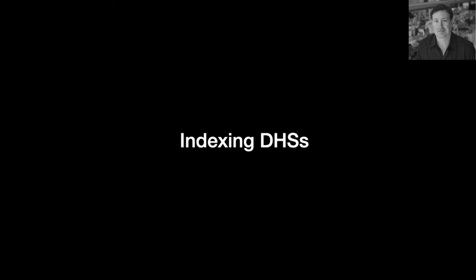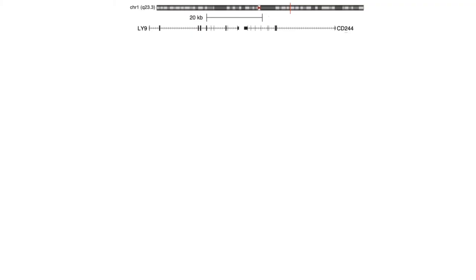So how does this look for indexing DHSs? Here's a roughly 75 kilobase region on chromosome 19 overlying a couple of genes as an example.